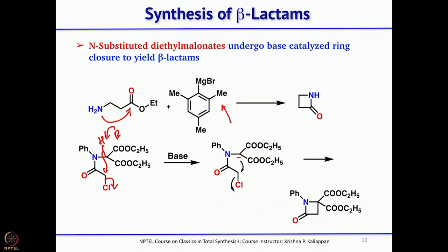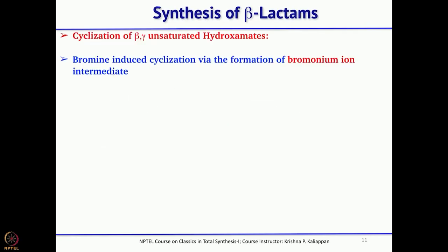In the SN2-type cyclization, the difference from earlier examples is that the amide bond is already pre-formed; a carbanion is generated and there is a good leaving group (chloride, bromide, or iodide) so the intramolecular SN2-like reaction closes the 4-membered ring. In contrast, in the earlier cases the lactam (amide) bond itself is formed during the key ring-forming step.